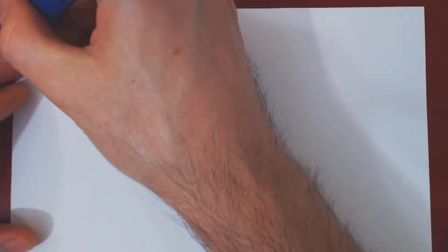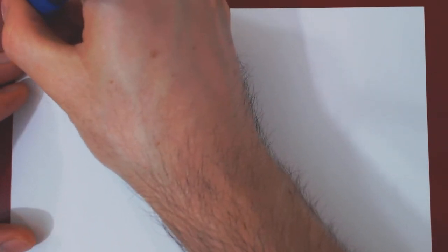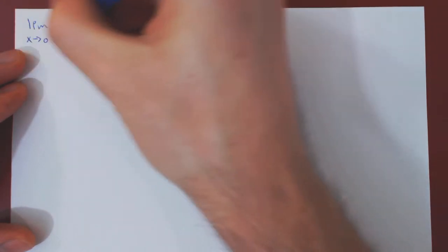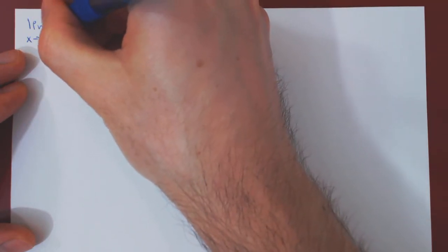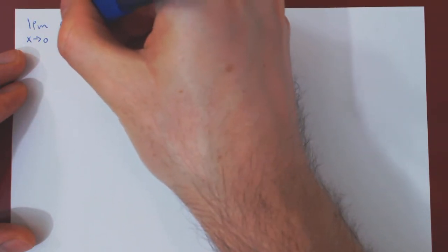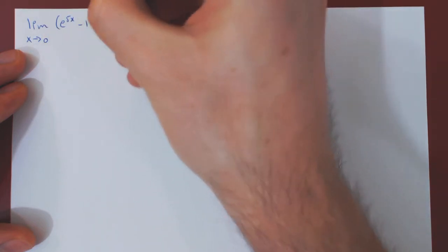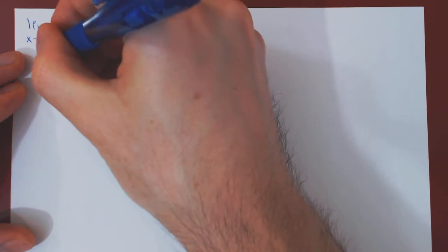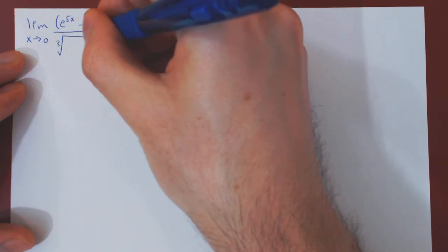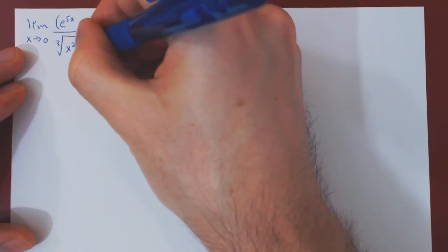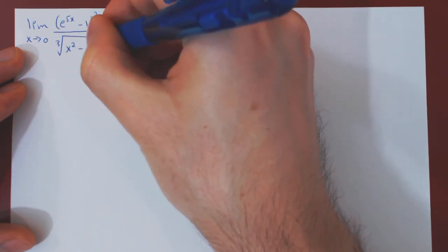Here's the limit. We are letting x approach 0. The numerator will be e to the 5x minus 1, all squared, over the cube root of x squared minus the sine of x squared.